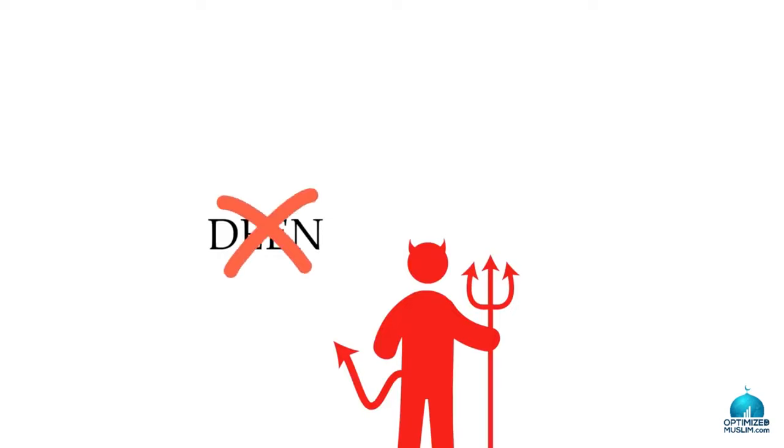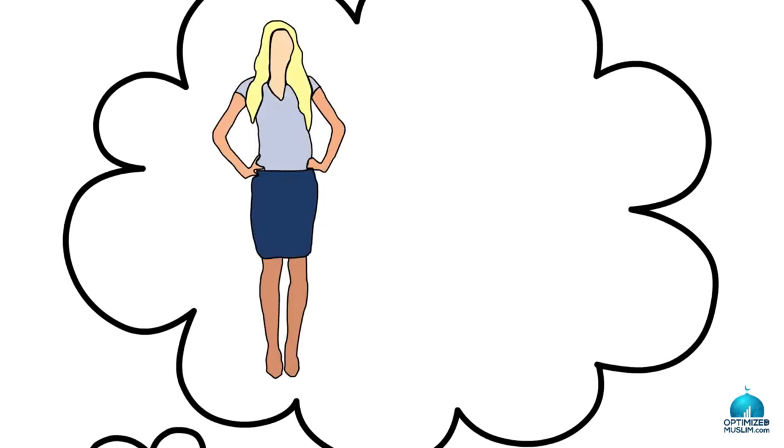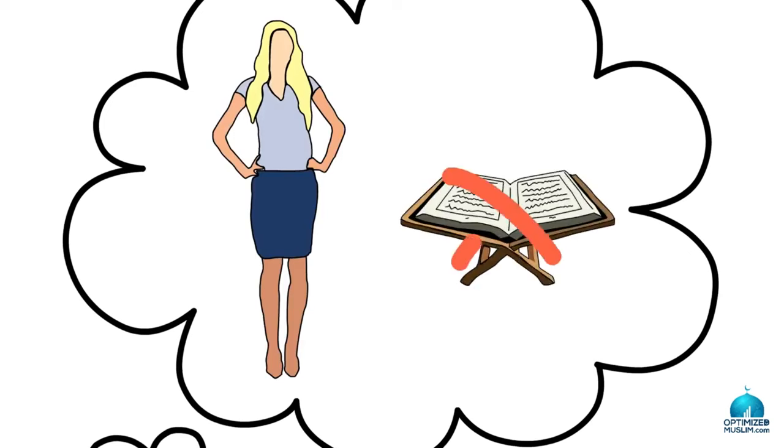And the trick of shaitan is that he doesn't want to take your deen away, because he knows you'll fight him. But if he takes your modesty away, he knows that the deen goes with it.